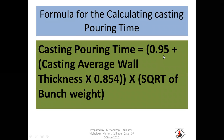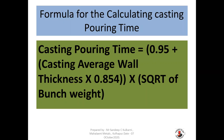The formula for calculating pouring time for the casting is: pouring time = (0.95 + casting average wall thickness) × 0.854 × √(punch weight). Here, punch weight refers to the total bunch weight of the casting in LBS.